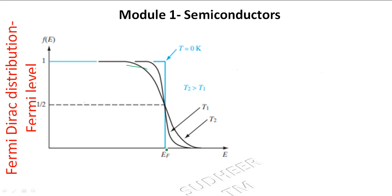At T = 0, the Fermi distribution plot has a sharp square shape. As temperature increases, the plot develops a sharp bending curve. The distribution is symmetric about EF — from EF to the left and right we have a symmetry plot across EF.